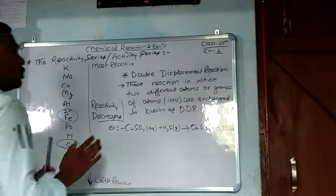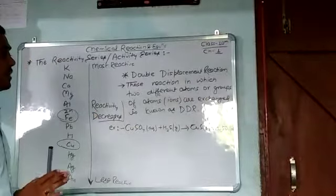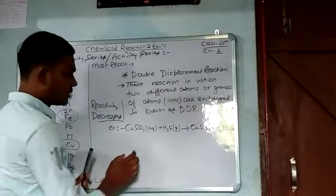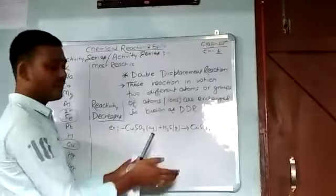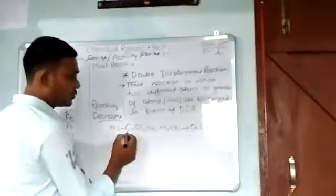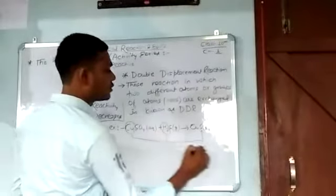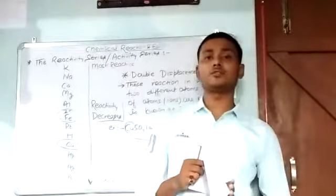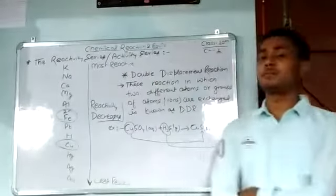Let us talk about the two compounds acting as reactants: CuSO4 and H2S. These two compounds react as reactants and produce CuS and H2SO4 as products. We can see that Cu goes with sulfur (S), and H2 goes with SO4. This interchange of two different groups between two compounds, from reactant to product, is known as a double displacement reaction.